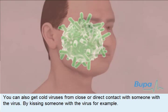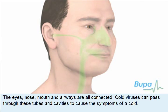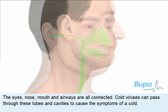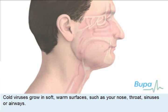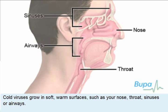The eyes, nose, mouth, and airways are all connected. Cold viruses can pass through these tubes and cavities to cause the symptoms of a cold. Cold viruses grow in soft, warm surfaces such as your nose, throat, sinuses, or airways.